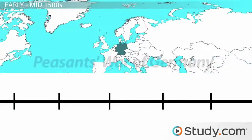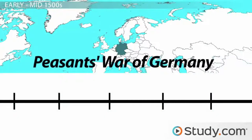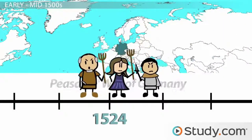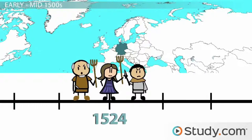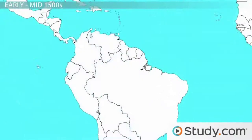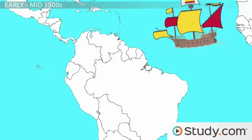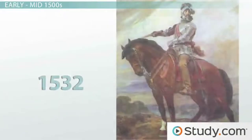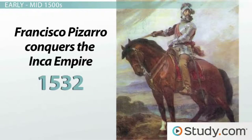Speaking of trouble, we also have the Peasants' War of Germany, beginning in 1524 and lasting about two years. Although its duration was very short, it was a large uprising of the peasant class, seeking influence and freedom for their everyday lives. Across the sea, while peasants in Germany were fighting for their freedom, Spanish conquistadors were robbing the New World of its freedom, as in 1532 Francisco Pizarro conquered the Incan Empire of Peru.